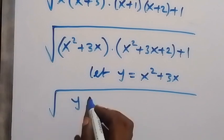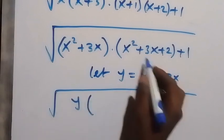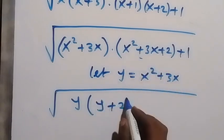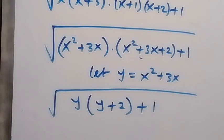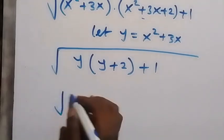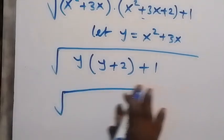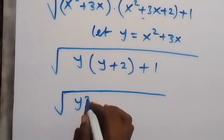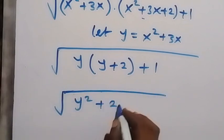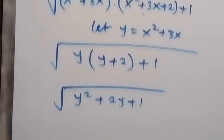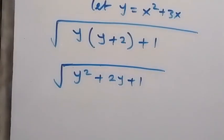Then this expression becomes the square root of y multiplied by y plus 2. We have y plus 2, so we can expand this now, and this will give us the square root of y squared plus 2y then plus 1.